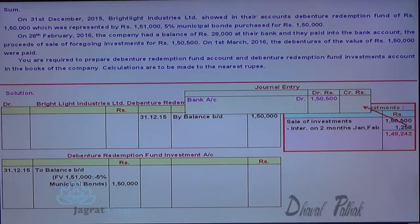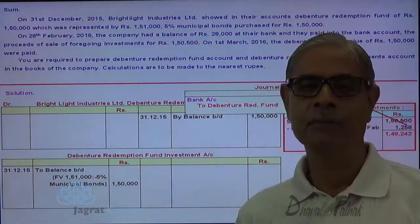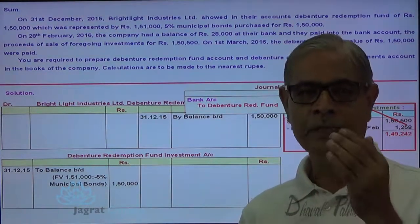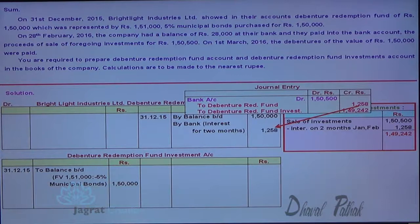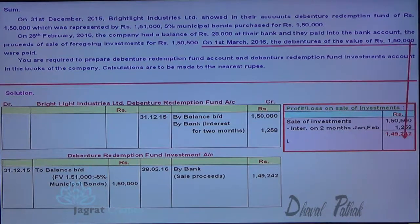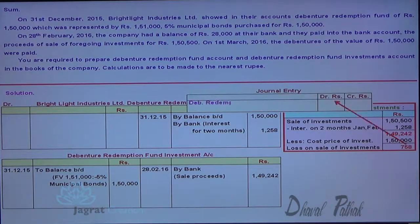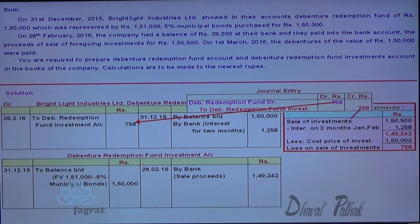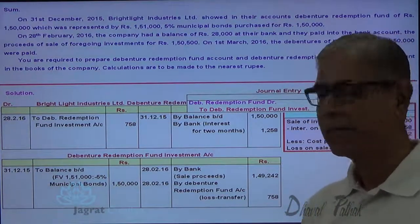Bank account is debited. Bank account is debited to debenture redemption fund account for the interest on sinking fund investment, which is credited to the sinking fund account. So interest on this investment is credited to the debenture redemption fund account, and the investment account is credited with ₹149,250. The debenture redemption fund account is credited with two months interest, and the net sales proceeds are credited to the investment account. The difference is a loss on sale of investment, which is transferred to the debenture redemption fund account.